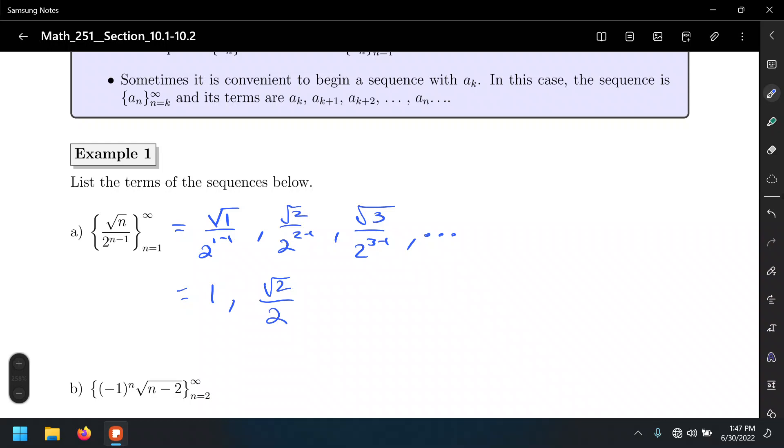1 over 1 is simply 1. The square root of 2 over 2 to the 2 minus 1, but 2 minus 1 is 1, that's 2 to the 1st, which is 2. Square root of 3, 2 to the 3 minus 1, that's 2 to the 2nd, which is 4. Terms of a sequence should be listed by commas. Keep in mind that this set of three dots indicates that the sequence goes forever. It depends on the question here. Sometimes MATLAB questions ask you to write the first 4, the first 5, etc.